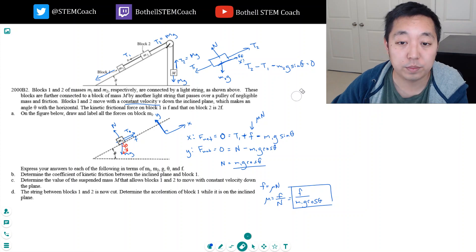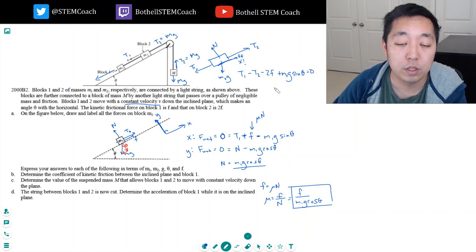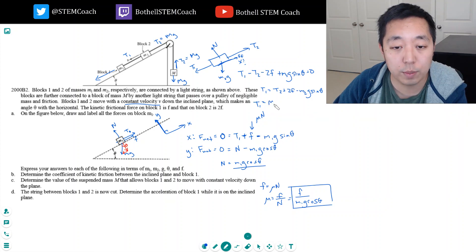Let's do this again. We'll do downward as a positive direction. T1 minus T2 minus the force of friction, which is 2F, plus M2G sine theta equals zero. So if I solve for T1, I get T1 is equal to T2 plus 2F minus M2G sine theta. Now I know T2 is equal to capital MG, right? So this T1 is equal to capital MG plus 2F minus M2G sine theta.